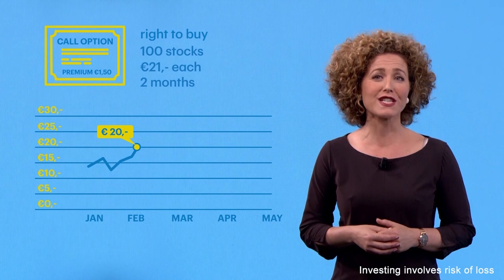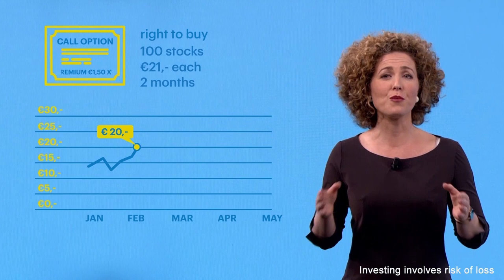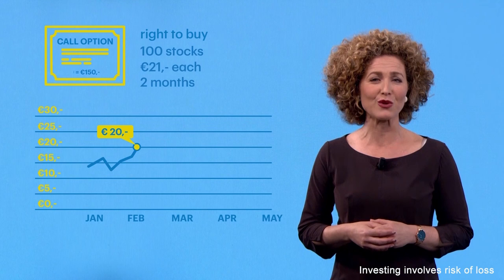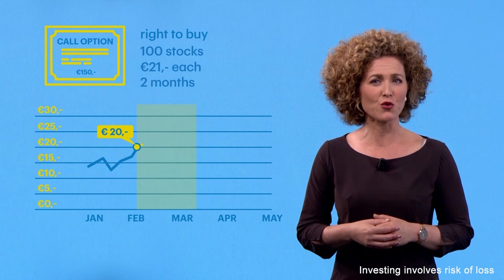This premium must be multiplied by a factor, which is the amount of stocks the option covers, often 100. If you purchase this option contract, the amount you invest would therefore be equal to 150 euros.